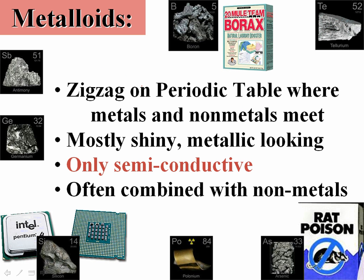Then we get to the metalloids. They're on what we call the zigzag line in the periodic table. This is the intersection where the metals and the non-metals meet. Most of them are shiny. They typically look very metallic. But they're only semi-conductive, meaning they only let some heat and electricity through. Because of that, a lot of these are used in things like semi-conductors.